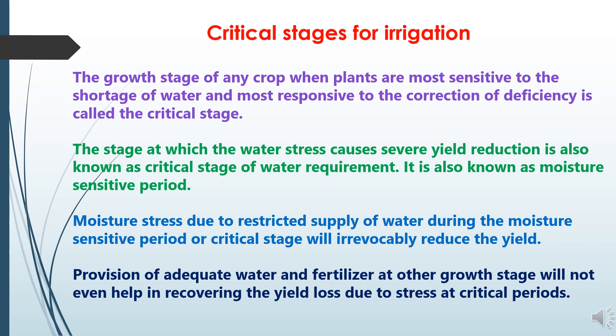This means that once there is a yield reduction, we cannot recover it even after supplying irrigation later. Provision of adequate water and fertilizer at other growth stages will not help in recovering the yield loss due to stress at critical periods.